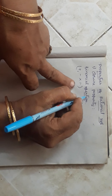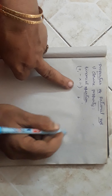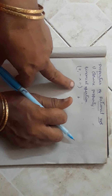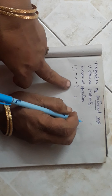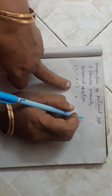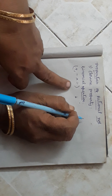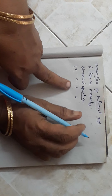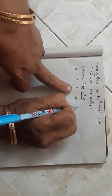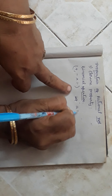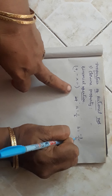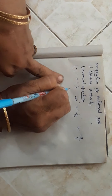So what is closure property? As you have learnt in your seventh class, if a and b are two rational numbers and the sum of them is also a rational number, then we say that addition is closed in the set of rational numbers. Let us take an example: let a be equal to something like 1 by 2.